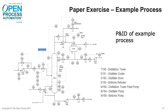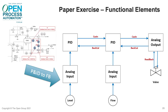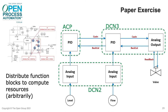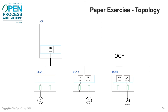To validate the OPAS specification and help clarify topics, we've spent a lot of time doing a manual walkthrough of building a system using the OPAS specification. We started with a piping and instrumentation drawing of a small example process, extracted the functional elements for the section we want to control, resulting in a simple function block diagram. We arbitrarily assigned the function blocks to different control nodes to make the example interesting, resulting in a topology of four control nodes connected to the OCF Ethernet network — some nodes have function blocks, some have I/O, some have both.